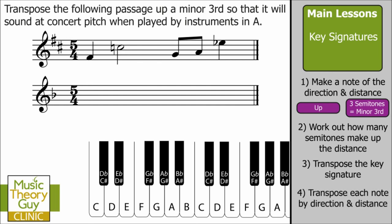Rule four: transpose each note by direction and distance. Our first note is F sharp — many students trip up here by forgetting to check the key signature. Here's F sharp on the keyboard; we go up three semitones: one to G, two to A flat or G sharp, and three to A. So our first transposed note is A. Write that down.